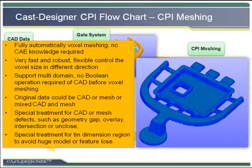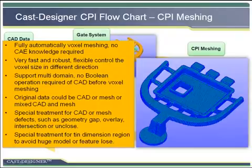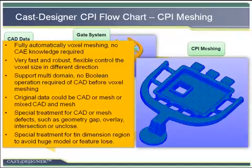The mesh size can be controlled in different directions. Moreover, Cast Designer supports multi-domain meshing, which is a breakthrough technology in the meshing process. With this technology, CAD models do not need boolean or assembly operations before meshing, which can save lots of time for the designer.